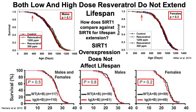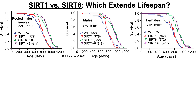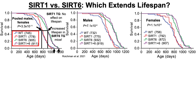How does SIRT1 compare against SIRT6 for lifespan extension? A study just published last week compared them head-to-head. Looking at survival on the y-axis plotted against age in days: wild type mice are the blue lines, SIRT1 overexpressing mice in red, SIRT6 overexpressing in green, and both SIRT1 and SIRT6 overexpressed in purple. SIRT1 showed no significant increase in average or maximal lifespan, but SIRT6 significantly increased both average and maximal lifespan.